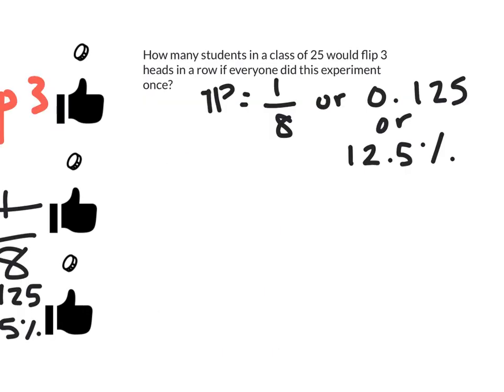Again, you can use the theoretical probability to help you make predictions about what you think might happen. So you might get a question like, say you had a class of 25 students and everybody in the class flipped the coin 3 times in a row. How many people would we expect to flip 3 heads in a row?